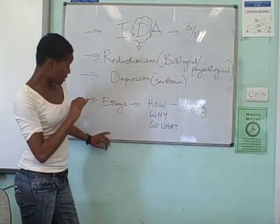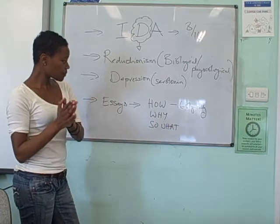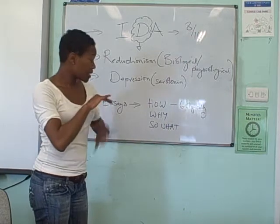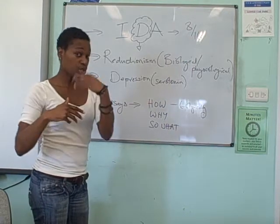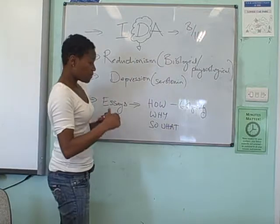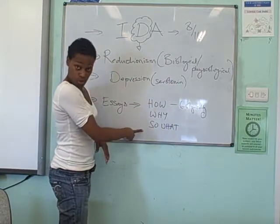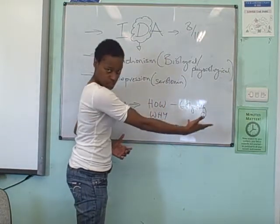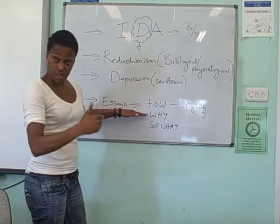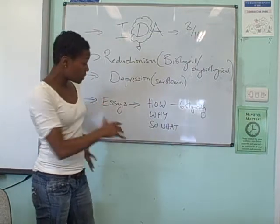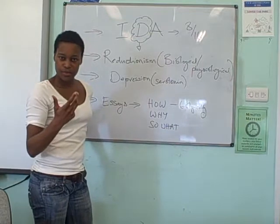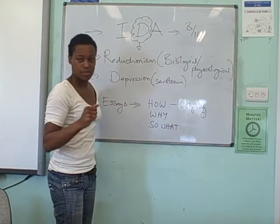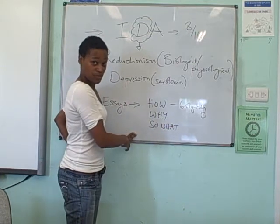Now, just in relation to your essays, this is very important. Don't just say something's reductionist — that makes no sense and you'll just get minimum marks for it. What you need to consider are the three little nuggets: the how, the why, and the so what. How is it reductionist? You can say how it's biologically reductionist. Number two, why it's reductionist. And finally, so what — what are the consequences of that? Always remember these three things. Don't just say it's reductionist; you've got to be more specific than that.